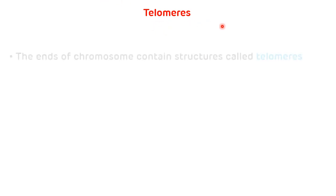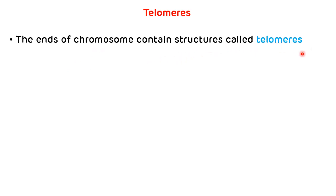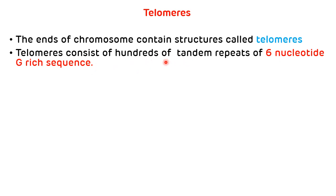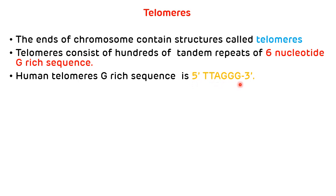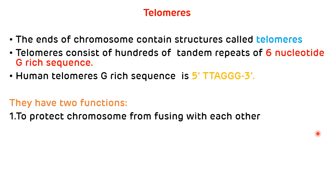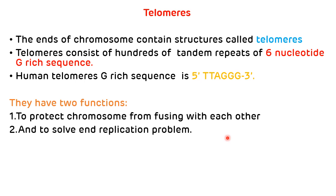This end replication problem is resolved by the synthesis of one special structure called telomeres. The ends of chromosomes contain structures called telomeres, and the telomeres consist of hundreds of tandem repeats of a 6-nucleotide G-rich sequence. In humans, the telomere sequence is 5'-TTAGGG-3'. Telomeres have two particular functions: first, they prevent the fusing of chromosomes with each other; and second, they resolve the end replication problem which occurs in eukaryotes.